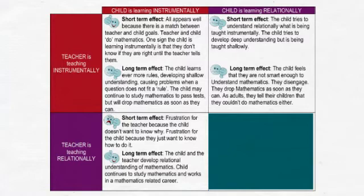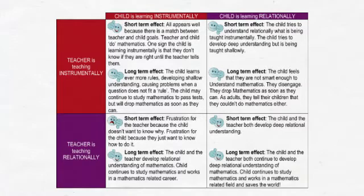They drop maths as soon as they can. And as adults, they tell their children that they couldn't do maths either. And now imagine the happiest case of all: the child wants to learn relationally and the teacher is teaching relationally. The short-term effect is that both the child and the teacher continue to develop deep understanding of both what to do and why. The long-term effect is that the child develops relational understanding, continues to study maths, builds a career in a maths-related field and saves the world.